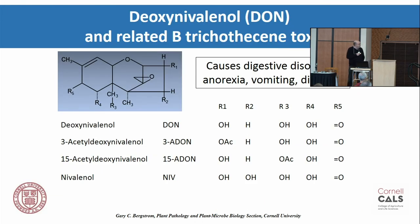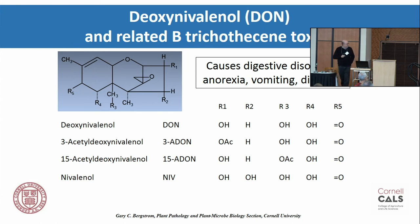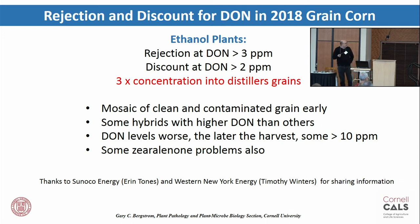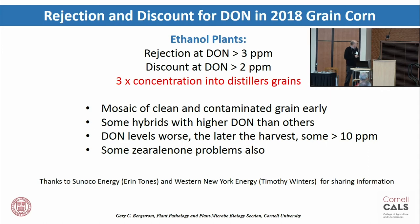There are related chemicals to DON: nivalenol is closely related, along with 3-acetyl and 15-acetyl DON. They show up in lower quantities, and many quick tests only test for DON, but these related compounds contribute to toxicity. This last year in New York, ethanol plants were rejecting corn at three parts per million and discounting at two parts per million — yet coming off farms we had things exceeding five, ten, even a dozen parts per million. At the same time, looking at corn coming off different fields, it was a mosaic of badly infested corn right next to almost clean corn.